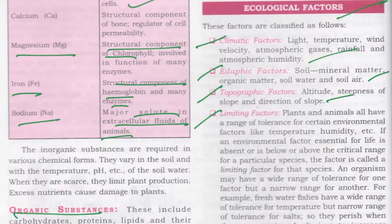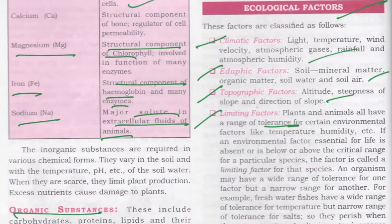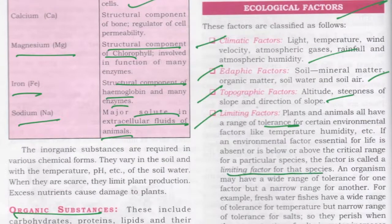What are limiting factors? Plants and animals have a certain range of tolerance for certain environmental conditions like temperature and humidity. If an environmental factor essential for life is absent or more than required, it is a critical stage for a particular species. This type of condition is known as a limiting factor for that species.